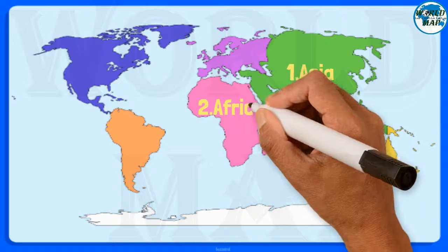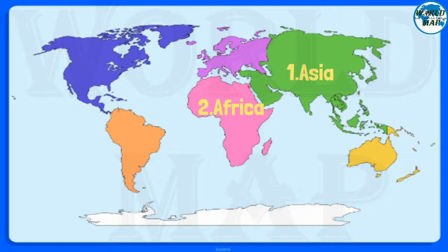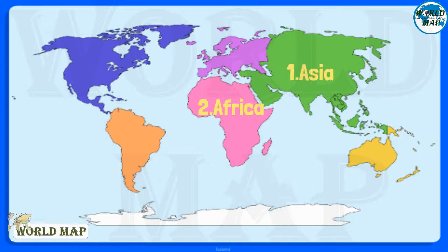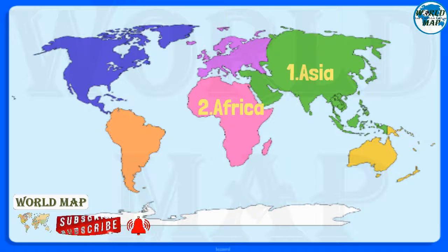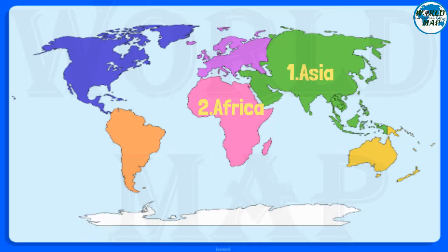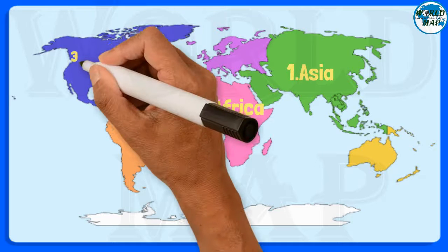Number 2: Africa. It is the second largest continent in the world after Asia, both by area and population. It comprises 54 countries and over 16% of the world's population.